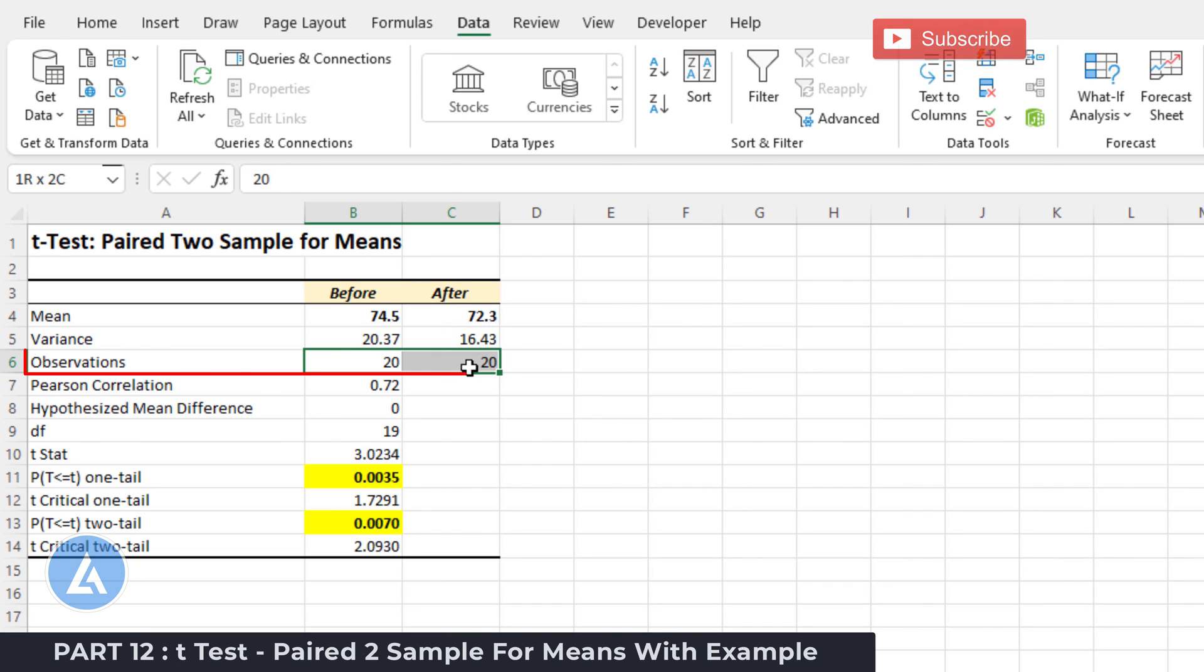In both scenarios, the number of observations are the same, which was 20. In these results, we can see there is a difference between mean before and after the resting heart rate. Before it was 74.5 and after it is 72.3.